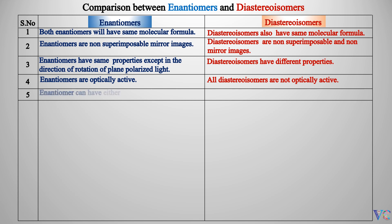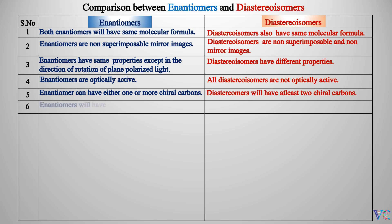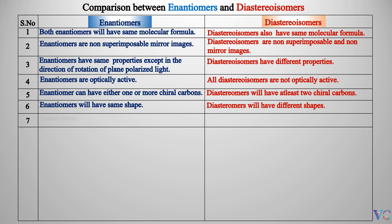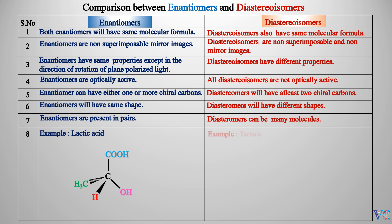Enantiomers can have either one or more chiral carbons. Diastereoisomers will have at least two chiral carbons. Enantiomers will have the same shape. Diastereomers will have different shapes. Enantiomers are present in pairs. Diastereoisomers can be many molecules. Example of enantiomers: lactic acid. Example of diastereoisomers: tartaric acid.